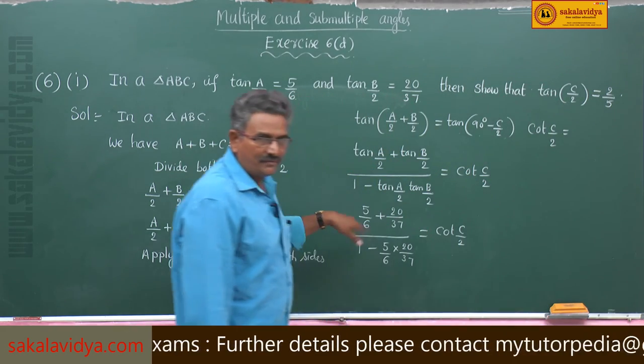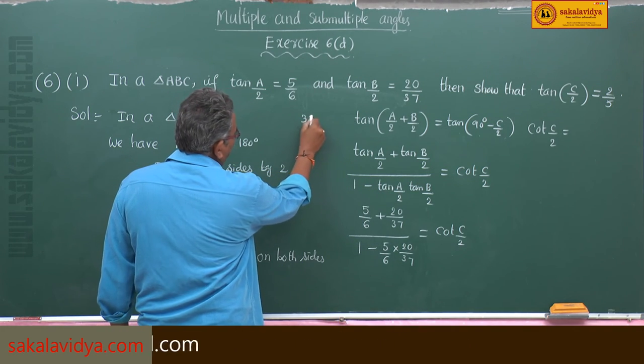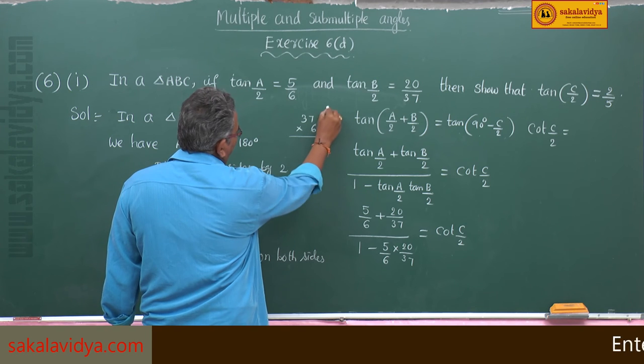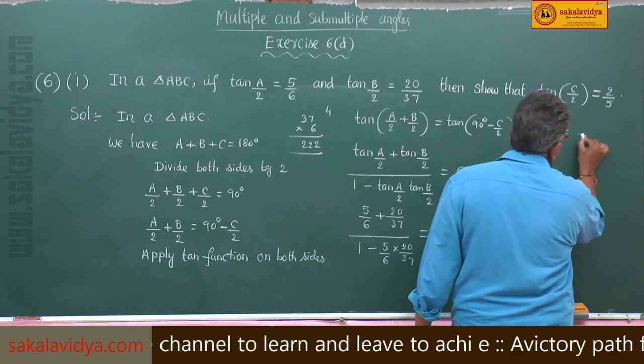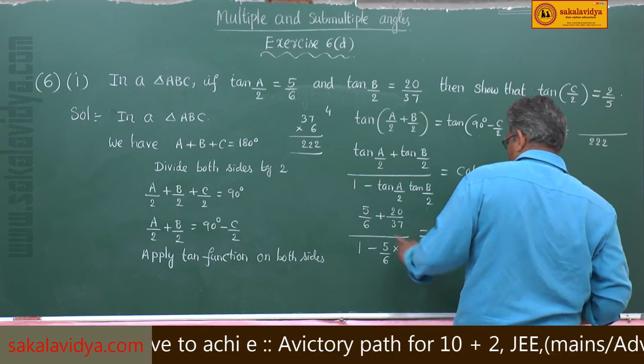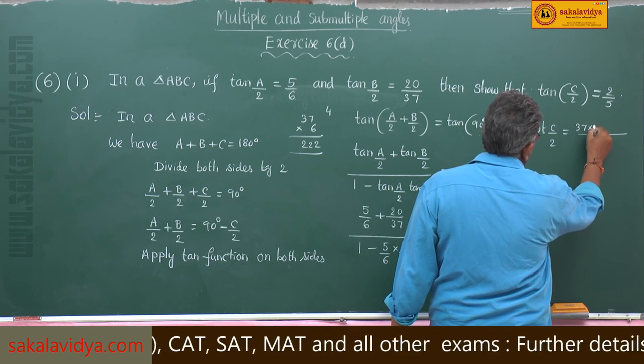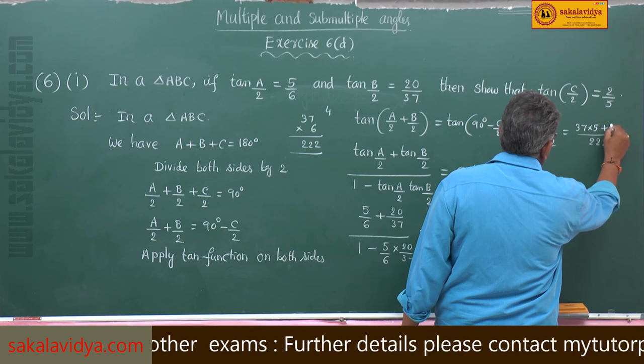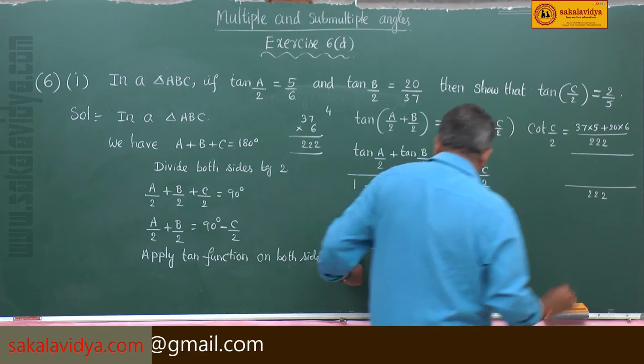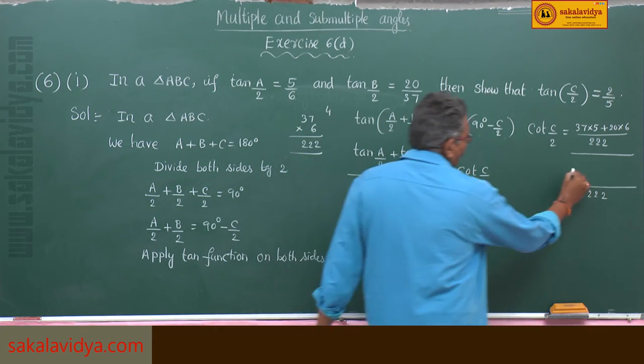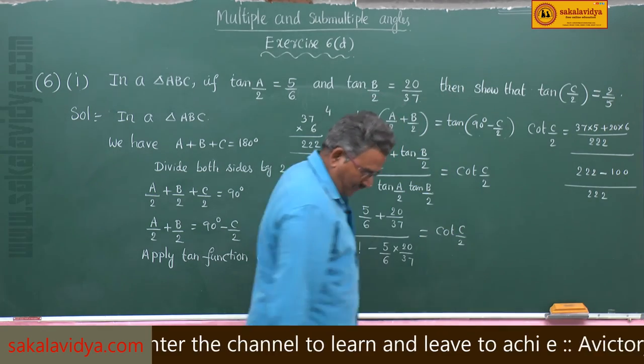Simplification we have to do. Here LCM 37 into 6, so 222 is the LCM. 37 into 5 plus 20 into 6 divided by 222 into 1 minus 100. Now 222 gets cancelled.